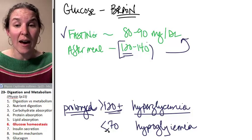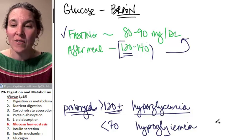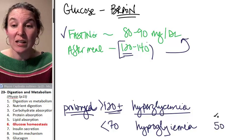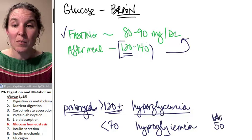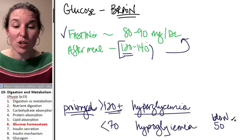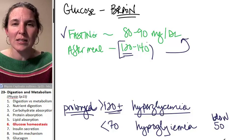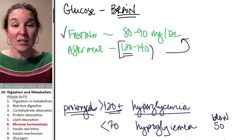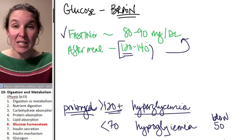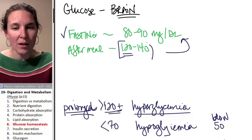And actually, if they go below 50, you can end up with hypoglycemic shock. That's a bad situation. That can cause irritability, fainting, seizures, coma.